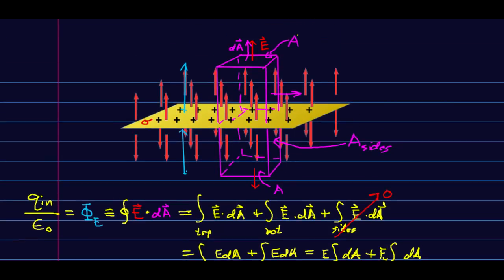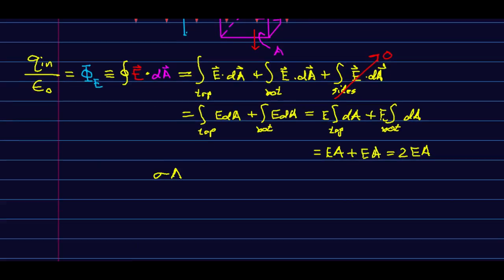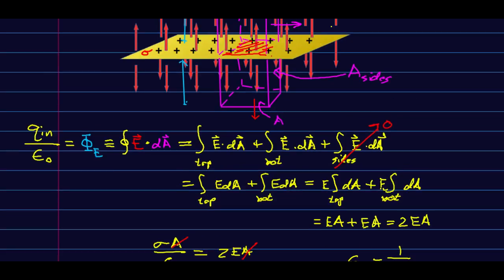Now let's look at Q inside — that is just the charge in the area A enclosed inside our surface, which is sigma·A. So we have Q_in over epsilon-naught: sigma·A over epsilon-naught equals 2EA. There's a common factor of A on both sides, so it cancels. Solving for E, I get sigma over 2·epsilon-naught. And remember epsilon-naught is 1 over 4πk, so this is just 2πk·sigma, which is what we got before — but it took most of a video lecture then. Here we've got it in a few fairly easy lines.